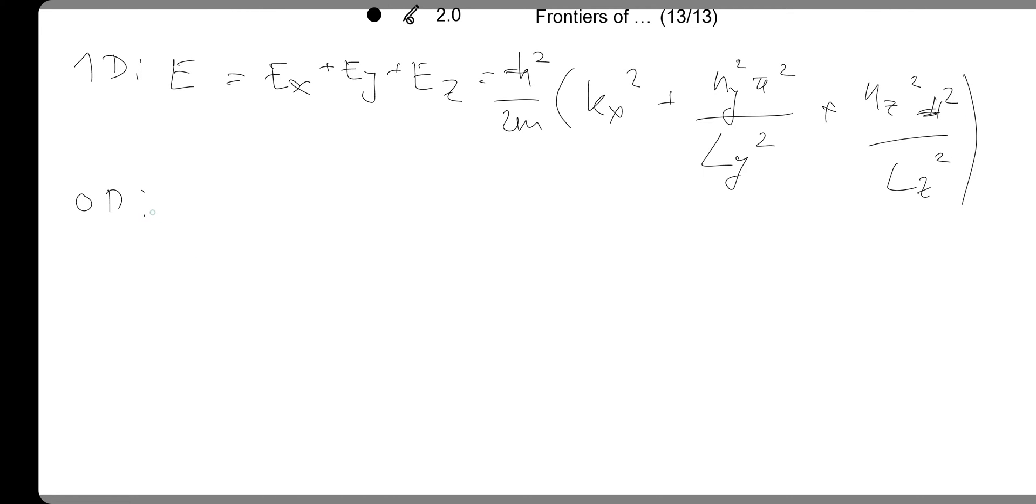And in zero dimensions, they're all quantized and we will have the solution that we got for the particle in the box: nx squared over lx squared plus ny squared over ly squared plus nz squared over lz squared.